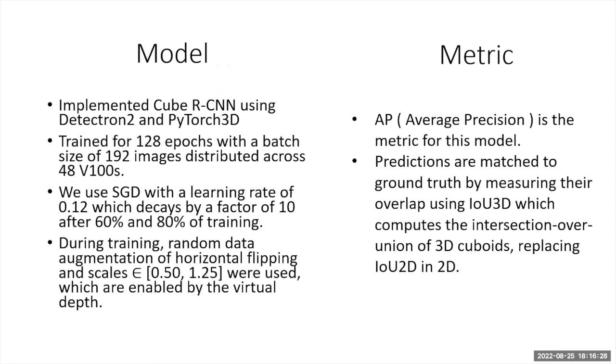The Cube R-CNN model is built using Detectron2 and PyTorch3D. We have trained the model using 128 epochs, each with batch size of 192 images. We used stochastic gradient descent with a learning rate of 0.12. With the help of the virtual depth concept, we enabled data augmentation with horizontal flipping at angles of 0.50 and 1.25.